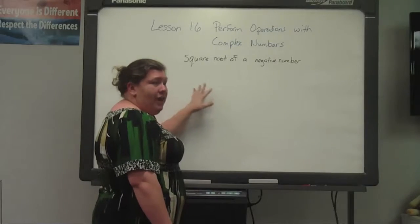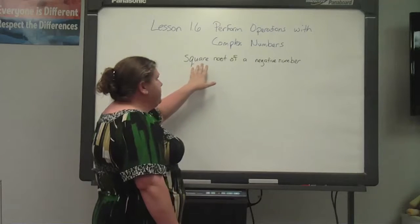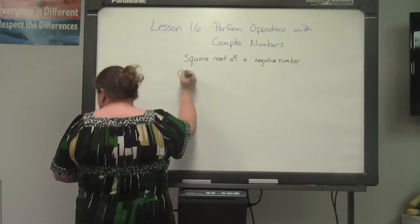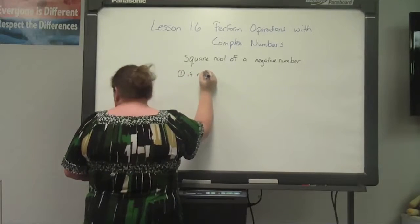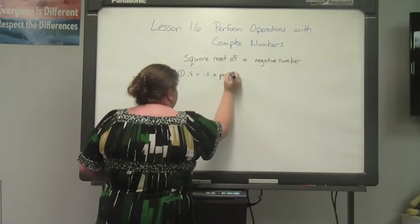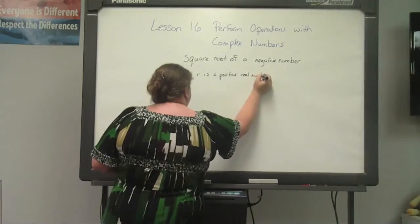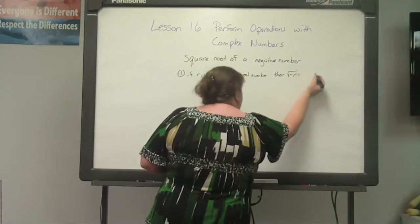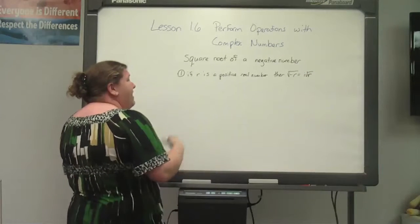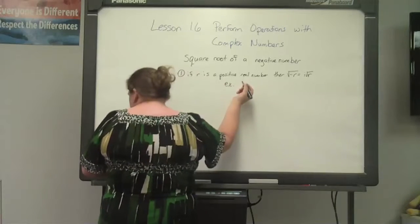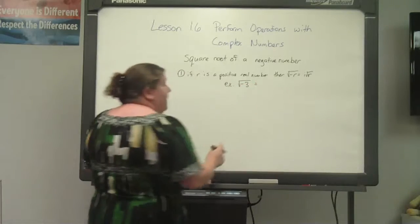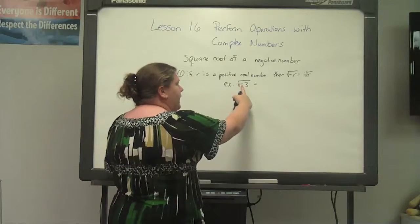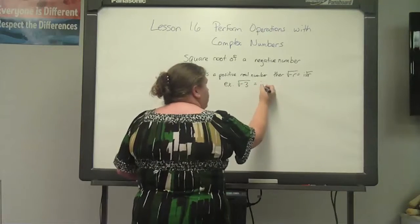The first concept under performing operations with complex numbers is the square root of a negative number. There are two properties. The first property says that if r is a positive real number, then the square root of negative r is equal to i times the square root of r. An example: the square root of negative three equals i times the square root of three, because anytime you see a negative in a radical, you immediately put an i and that i gets rid of the negative.